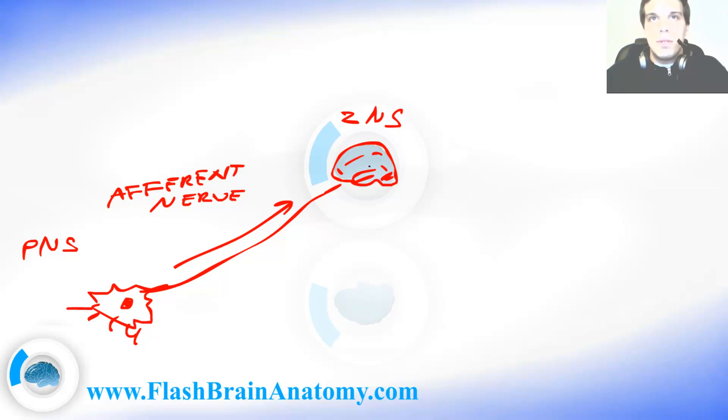When the signal comes to the brain, the brain changes it, modifies it, and it can save it, and it can also answer the signal. So, we have another efferent nerve. It transfers the signal again in the peripheral nervous system.